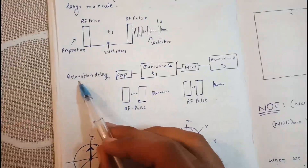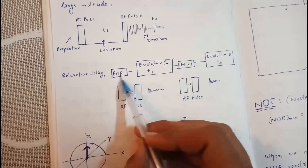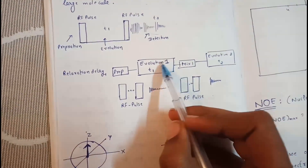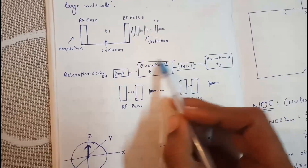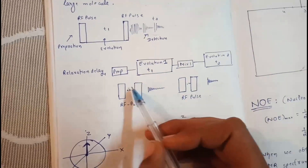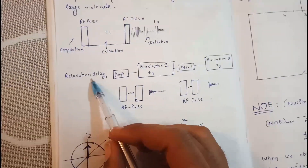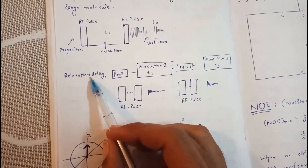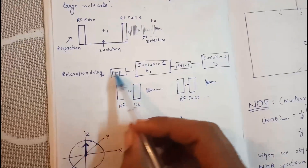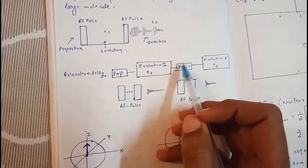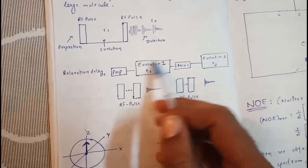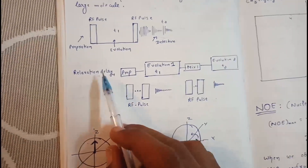The relaxation delay refers to the time given for evolution. We can say that the evolution time t1, before we get the RF pulse, represents the preparation state. The relaxation delay is essentially the evolution time, either t1 or t2, during which the system evolves before detection.